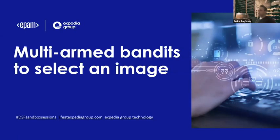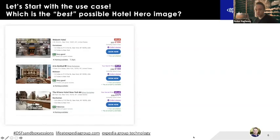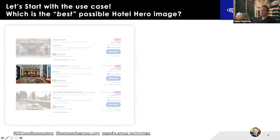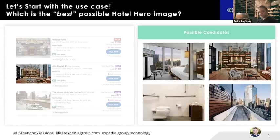My name is Fedor, and I'm a lead machine learning scientist at Expedia. I've been working in the reinforcement learning space for about three years, and this is one of the projects we started in 2018. I'll go through mostly the use case and basic theory behind multi-armed bandits. The use case: on the classic search page, we're selling hotels, and we want to optimize — find the best possible image to show to our customers. We call it the hero image.